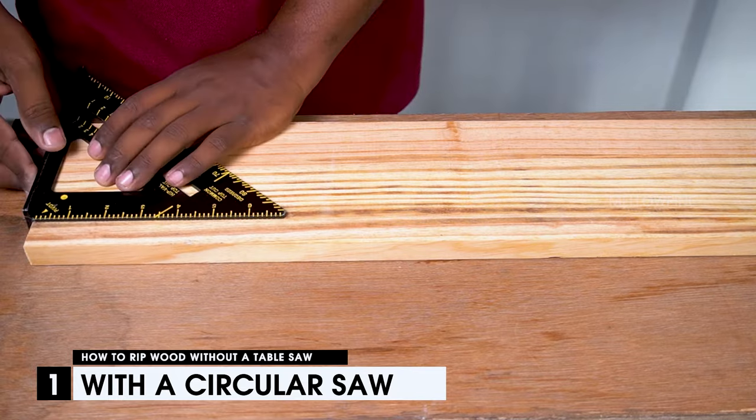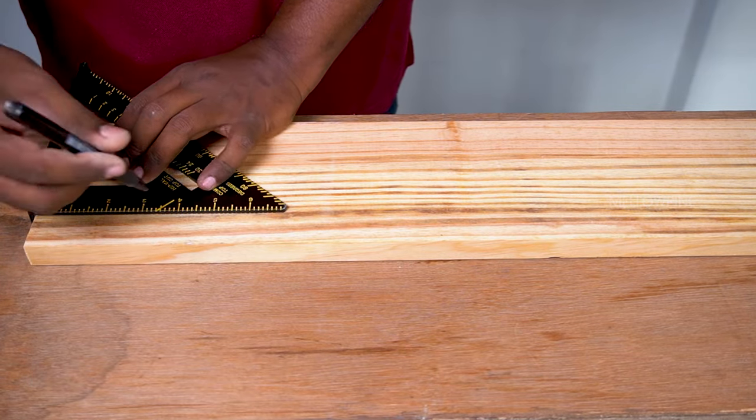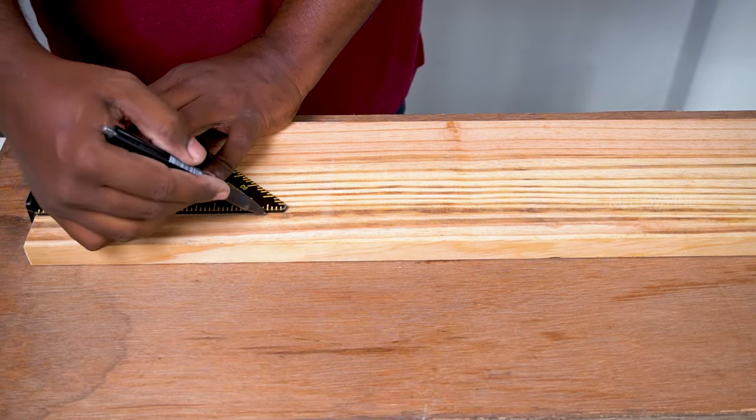First, place the wood to be ripped on top of a sacrificial board. Using a speed square and a pencil, draw a cut line along the length for ripping.